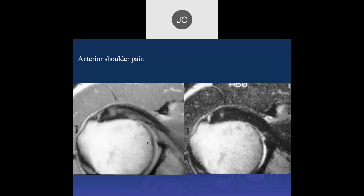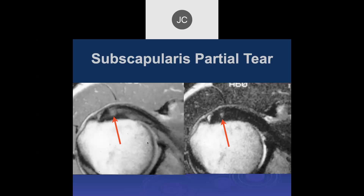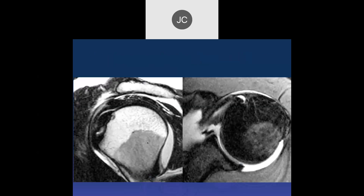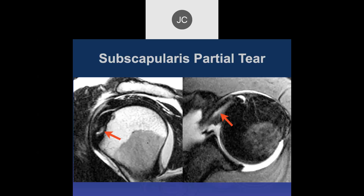Anterior shoulder pain: looking at the subscapularis, there's some tendinosis at the insertion. This is an early subscapularis partial tear. On sagittal and axial views, there's a focal increased signal within the subscapularis that doesn't connect with the bursal surface — it looks intersubstance. So this is an interstitial partial tear, bigger than the one we saw before.